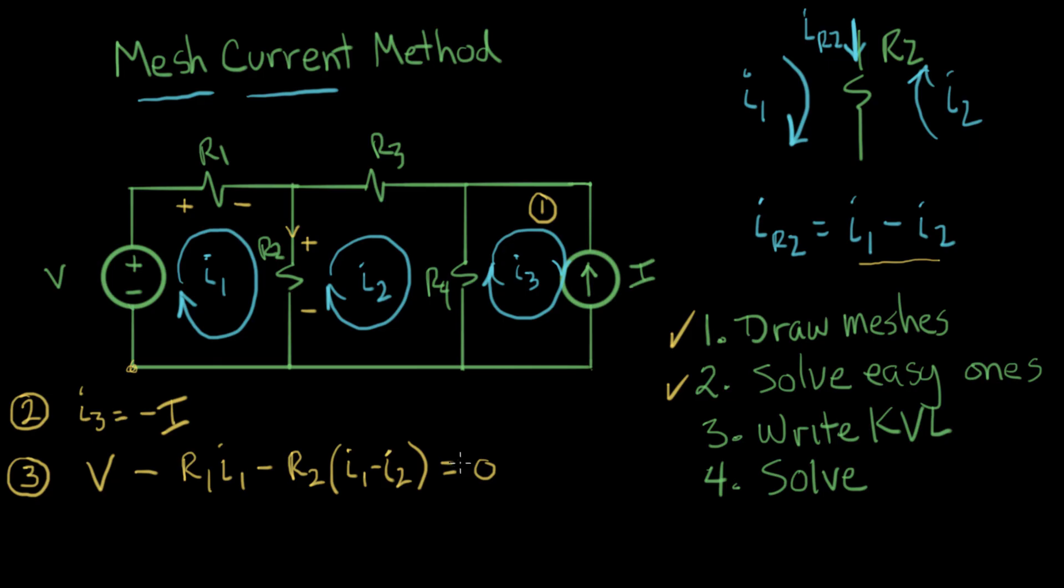All right, next step, let's do the other mesh. We're going to start here and go around this mesh in the same way. First, the first term, we're going to see a voltage, oh look, it's a voltage rise. So we'll have a plus here, a voltage rise, and it's the same term that we had in the previous equation. It'll be plus R2 times I1 minus I2. That's the voltage rise going from here to here.